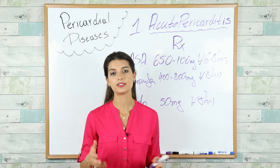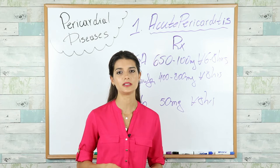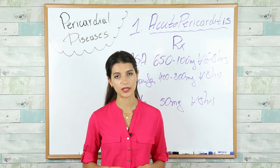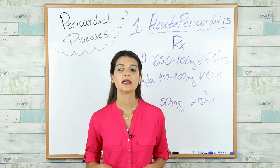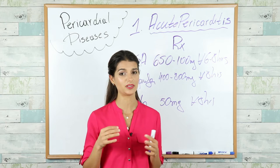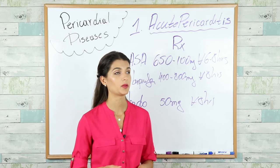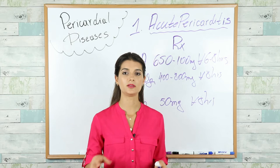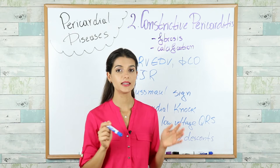You can also treat with corticosteroids, but please avoid them in viral pericarditis. Avoid them also in the first several days after MI because they can lead to rupture of the right ventricle. Use them when pericarditis doesn't respond to NSAID treatment, or in immunologic conditions causing the pericarditis. Any cause of acute pericarditis left untreated can lead to chronic pericarditis.